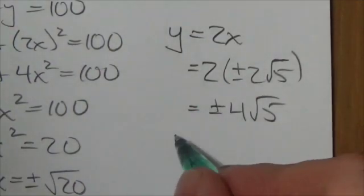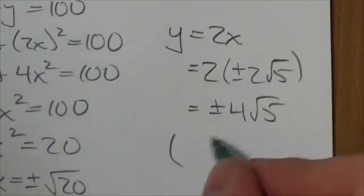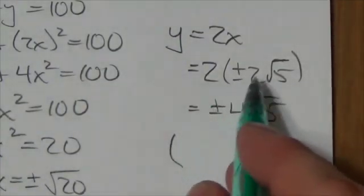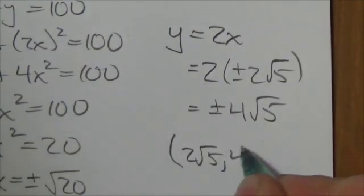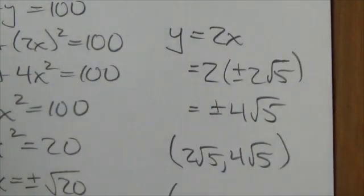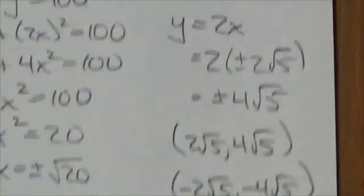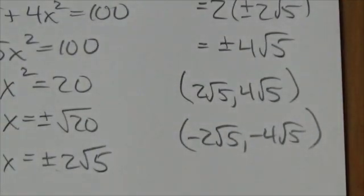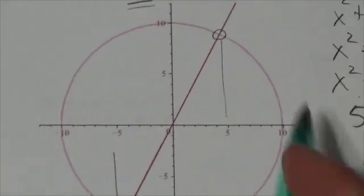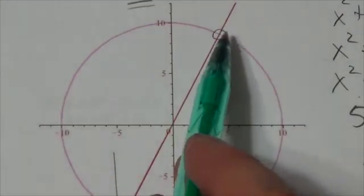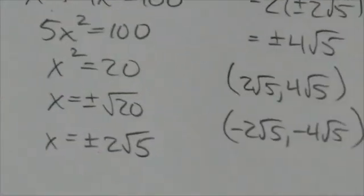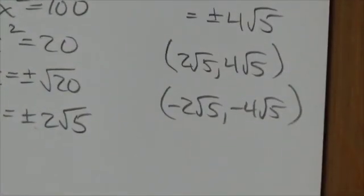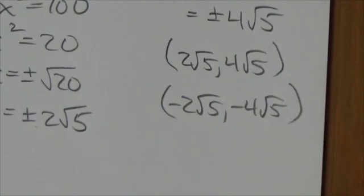But this gives us the point here. If it's positive, if the x value is positive, the y value here is positive, so this is going to be 2 root 5, 4 root 5. And if it's negative 2 root 5, it'll be negative 4 root 5. And that makes total sense based on the diagram I'm seeing because here I'm seeing positive y, positive x, positive y, negative x, negative y. So again, 2 root 5, 4 root 5, negative 2 root 5, negative 4 root 5.